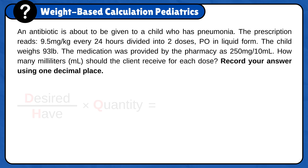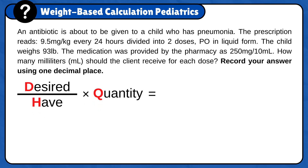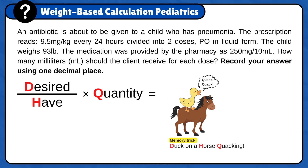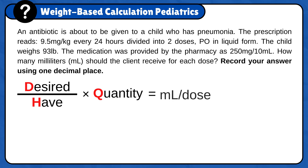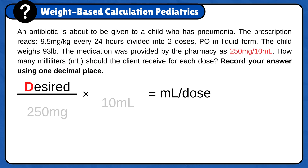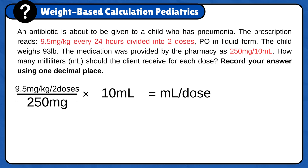First, set up the formula: desired over half times quantity. Just imagine a duck on a horse quacking. Now add the unit answer, milliliters per dose, because the question is asking how many milliliters should the client receive for each dose? Now that the formula is ready, we need to plug in the numbers. Start with half and quantity — for this problem it's 250 mg per 10 milliliters. For desired, you will plug in the doctor's order: 9.5 mg per kg every 24 hours divided into two doses.